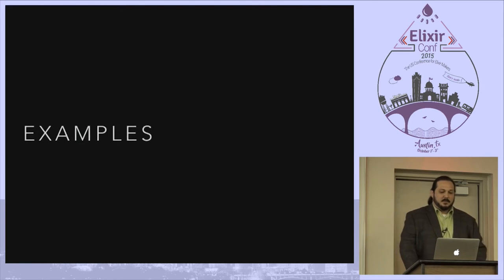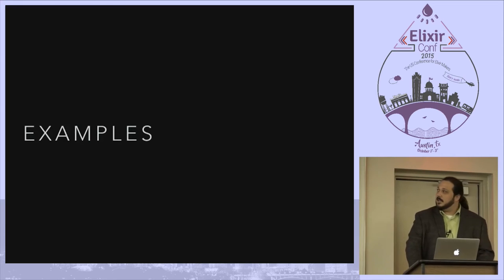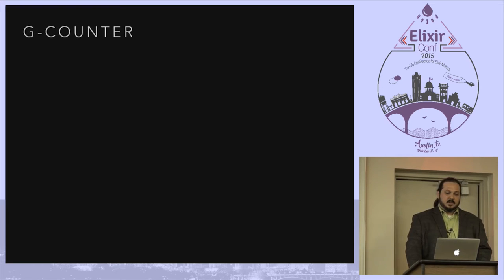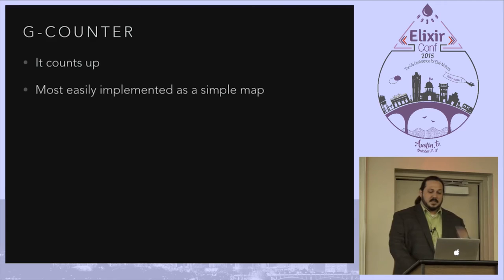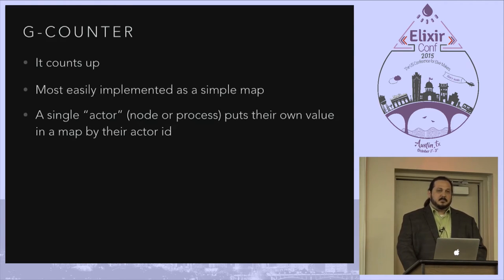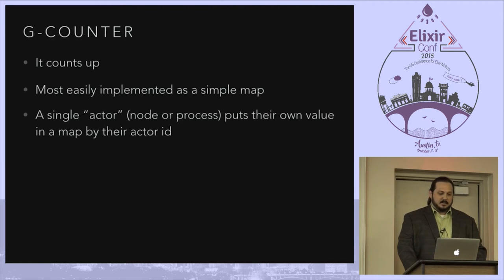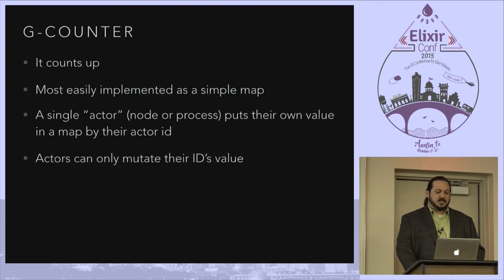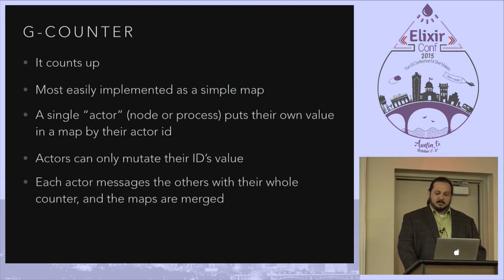Here are some examples so you can see how they work. There's a GCounter — it counts up. It's most easily implemented as a simple map. A single actor increments their own ID in the map, and actors can only mutate their own value.